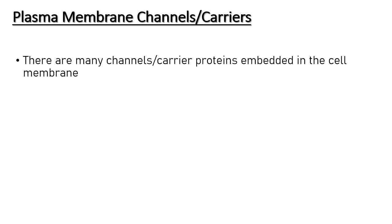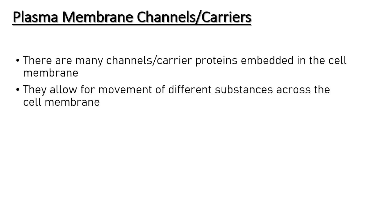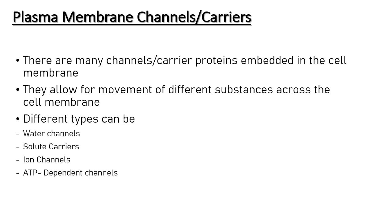Plasma membrane channels are simply channels that allow for transport of different substances across the cell membrane. There are many channels or carrier proteins embedded into the cell membrane. The different types include water channels, which allow water to pass through, solute channels or solute carriers that allow solutes such as glucose to pass through, and ion channels which allow charged particles such as sodium, magnesium, and potassium to go through the cell membrane.